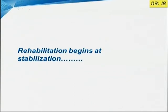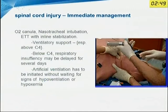As said earlier, there is no proper treatment available for spinal cord injury — we are doing rehabilitation right from the beginning. Rehabilitation begins at the time of stabilization itself. Immediate management includes oxygen, nasal cannula, endotracheal intubation, and inline stabilization with a collar. We have to stabilize the patient. Ventilatory support is very important, especially when the trauma is above C4.